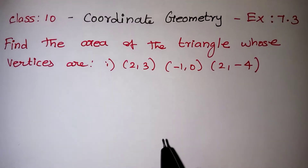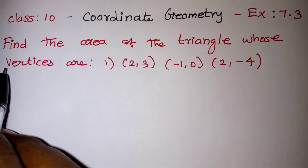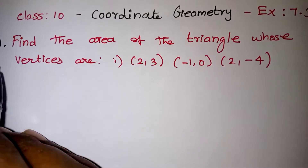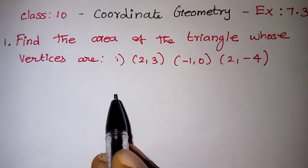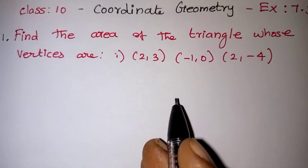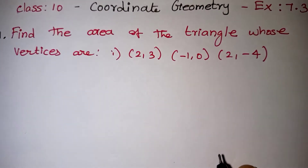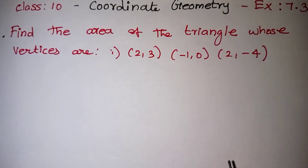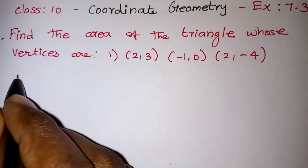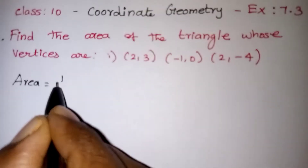Hi students, in this video we are going to learn exercise 7.3, question number 1: find the area of the triangle whose vertices are given as (2, 3), (-1, 0), and (2, -4). There are two ways to find the area — we can apply the formula, or we can use a shortcut. I am going to teach you both methods here. First method: by applying the formula.